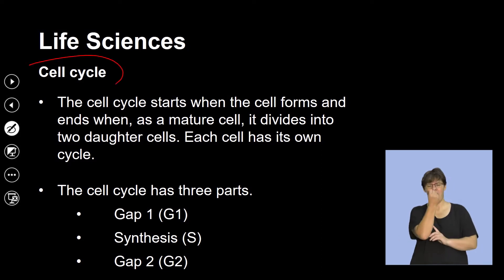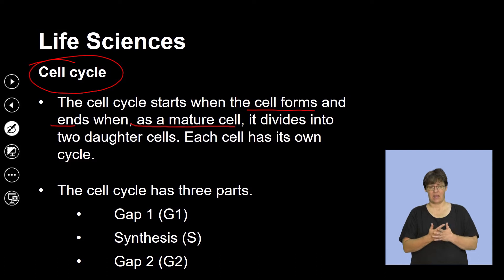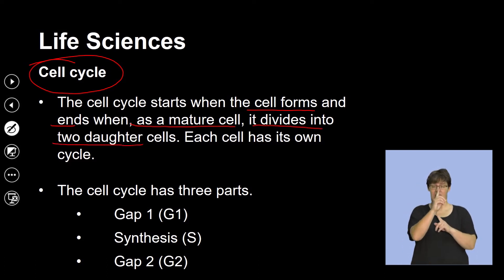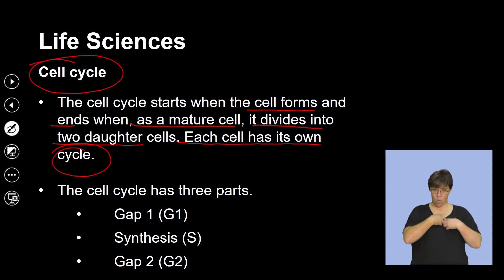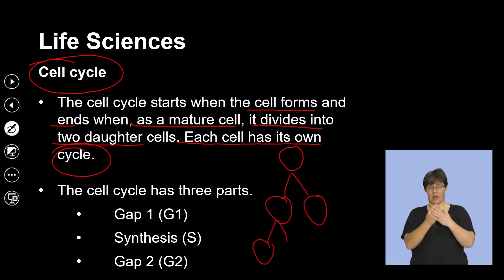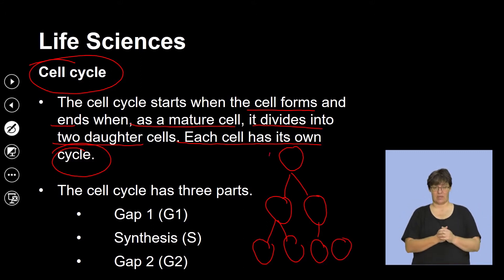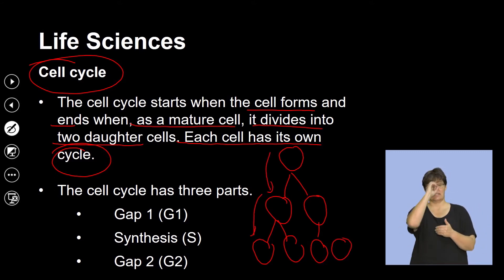Let's try and understand what the cell cycle is. The cell cycle starts when the cell forms and ends as a mature cell divides into two daughter cells. Each cell has its own cycle. A cell will divide to form two cells, and each of these cells will further divide and continue the process of cell division.